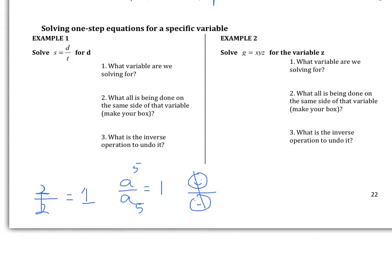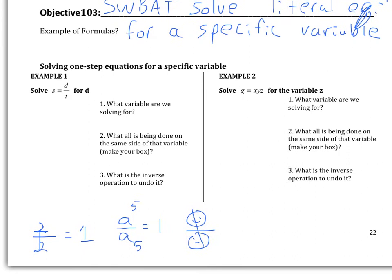If we look at number 1, example number 1 says solve S equals D over T for D. Now real quick, hopefully some of you know what this equation is actually about. This is the equation for speed. So let's write this out: speed is equal to distance over time. To measure speed, you simply take the distance and divide it by the time, and that will tell you the speed.